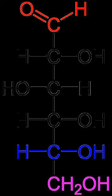Polysaccharides are also common sources of energy. Many organisms can easily break down starches into glucose. Most organisms, however, cannot metabolize cellulose or other polysaccharides like chitin and arabinoxylans. These carbohydrate types can be metabolized by some bacteria and protists. Ruminants and termites, for example, use microorganisms to process cellulose. Even though these complex carbohydrates are not very digestible, they represent an important dietary element for humans, called dietary fiber.